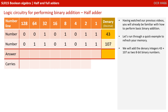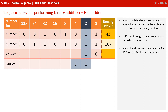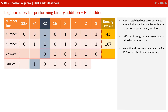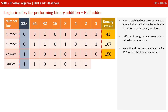We're going to add together the denary integers 43 and 107 as two 8-bit binary numbers. A 1 and a 1 is 0, carry a 1. A 1, 1 and a carry 1 is 1, carry the 1. A 0, 0 and the carry 1 is 1, carrying 0. 1 and 1 is 0, carry the 1. 0, 0 and the carry 1 is 1 with nothing to carry. 1 and 1 is 0, carry a 1. 0, 1 and the carry 1 is 0, carry a 1. And finally 0, 0 and the carry 1 is 1. This gives us the answer 150 if we convert it back to denary.